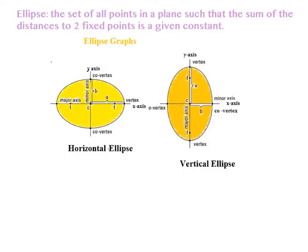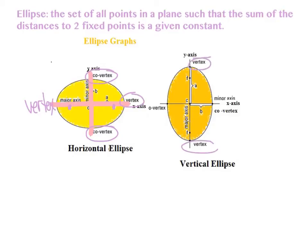Here we have two pictures of standard ellipses, horizontal and vertical, with all the major parts labeled. We've got a major axis, which is the long one, and a minor axis, which is the short one. And then we have foci, vertices, and co-vertices. There's foci here, co-vertices here, and a vertex here and a vertex here. On vertical ellipses, vertices are on the long axis and co-vertices are always on the short axis. We have our foci there as well.